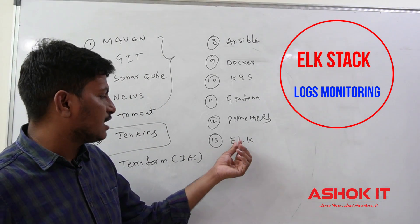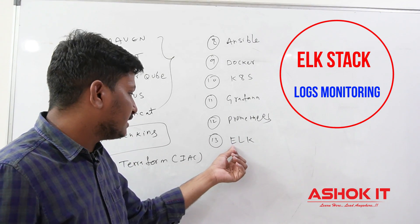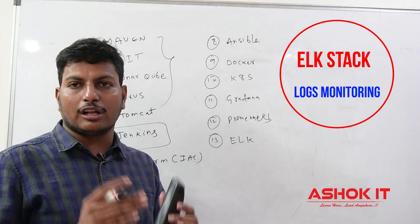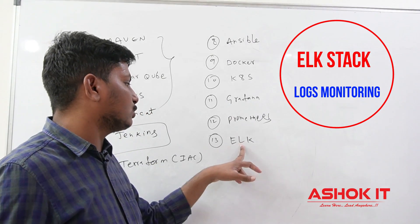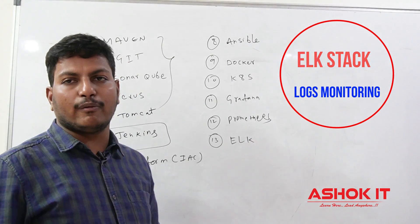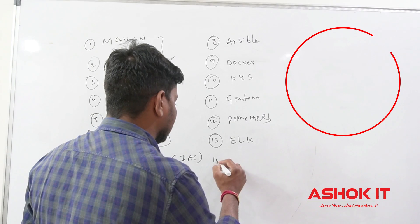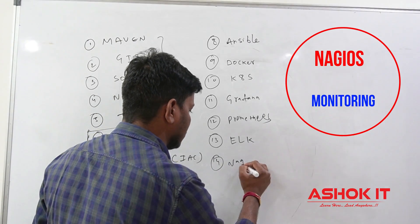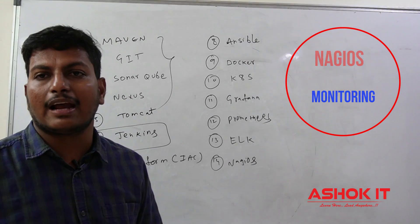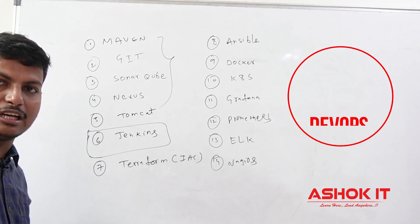For application log monitoring we are going to use ELK. ELK is a combination of three products: Elasticsearch, Logstash, and Kibana. Elasticsearch is used to store the logs. Logstash will collect the logs from all the nodes in the cluster and store them in Elasticsearch. Kibana will provide the UI to view the logs of our application. We are also going to use Nagios, which is used to monitor our application and application performance.